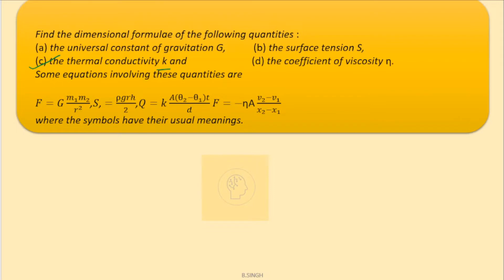And the relation for this thermal conductivity is given here, where q is the heat. So, let me rewrite this expression again here. So, q is equals to k A theta 2 minus theta 1 into t whole divided by d.